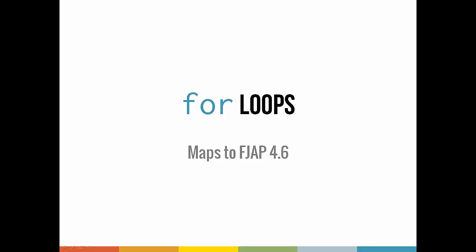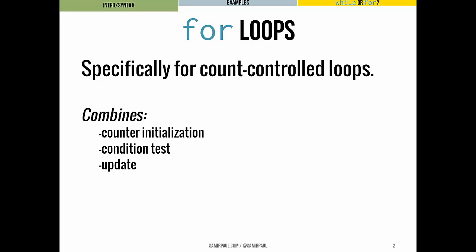Last time we talked about while loops. Today we'll talk about for loops, which are another structure we can use for looping. These are specifically good for count-controlled loops. The reason for that is they combine a bunch of the different little pieces that we need in order to make a count-controlled loop.